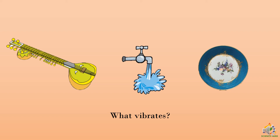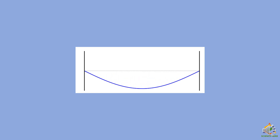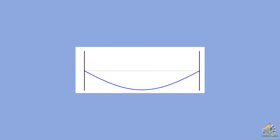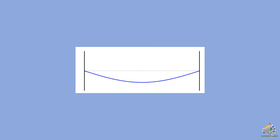This is how a plucked string looks in slow motion — it goes up then down. This is called vibration. This to and fro motion is also called periodic motion because it moves periodically up and down.